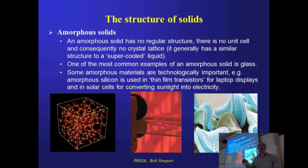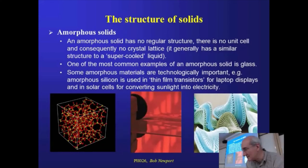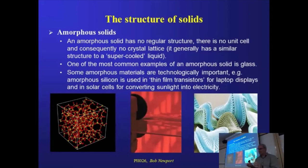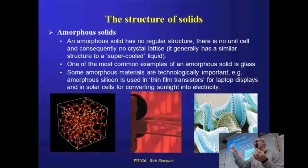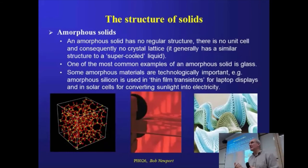That slight variation — that ten-degree wobble in the angle between one unit and the next — is enough to destroy the lattice. The same basic chemistry is applying, but the end result in terms of the arrangement of atoms is quite different. This is a volcanic glass called obsidian. It's black just because there's a small amount of iron contamination, but chemically it is, to all intents and purposes, exactly the same as quartz. But obsidian lacks the crystal structure that quartz has. So they're almost the same except one is crystalline and one is amorphous.